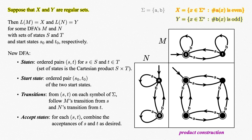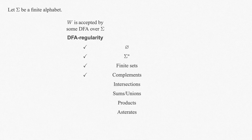In short, given any two regular sets, by definition we have DFAs accepting each set. The product construction allows us to construct a new DFA accepting either the union or intersection of the two given regular sets, depending on how we assign the accept states, which proves that the union or intersection of two regular sets is a regular set. The net effect is that we can add two checkmarks to our to-do list for regular sets.